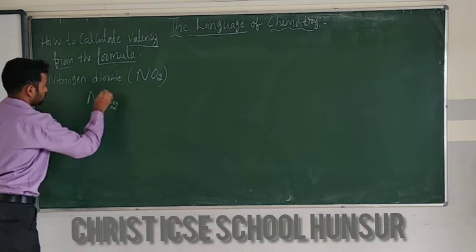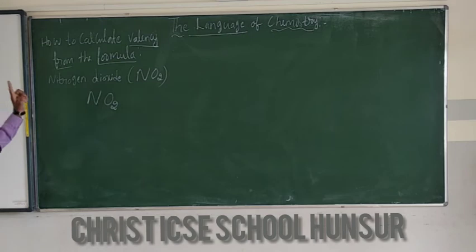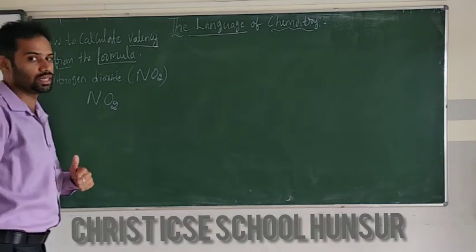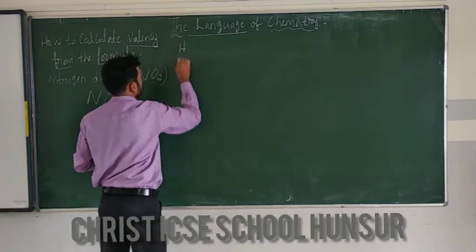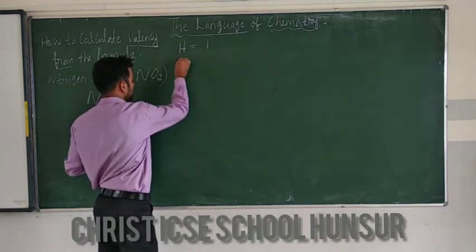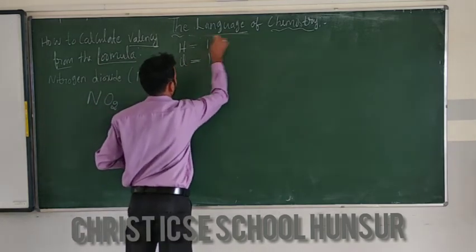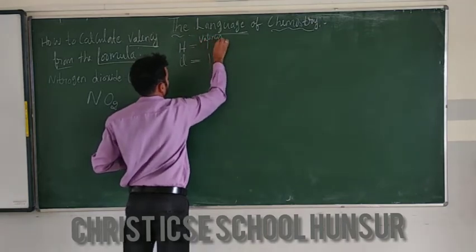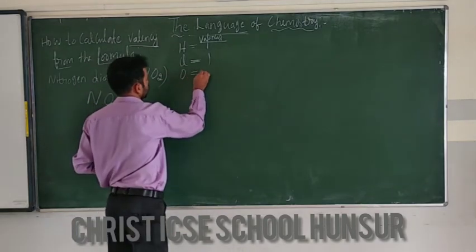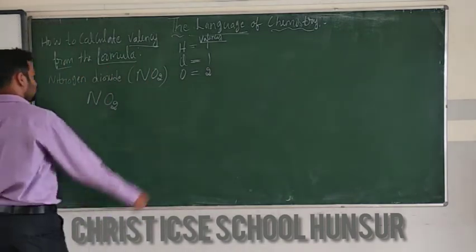First I will write the formula here. To calculate the valency of nitrogen from NO2, a few valencies I already know: hydrogen valency is 1, chlorine valency is 1, and oxygen valency is 2. Keep these valencies in mind.